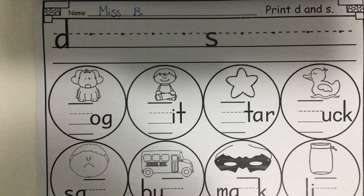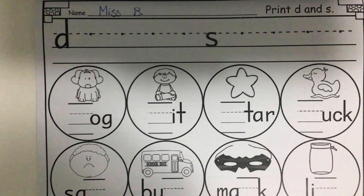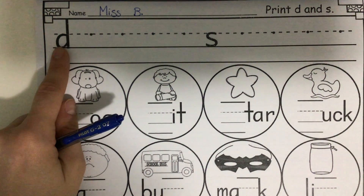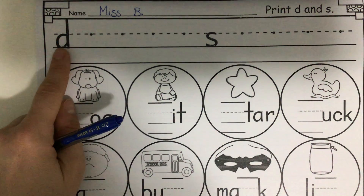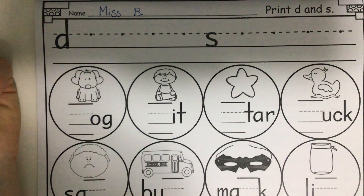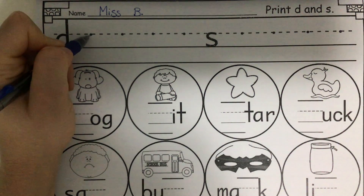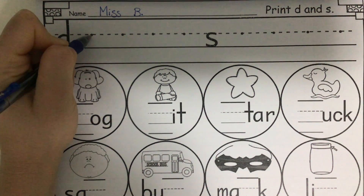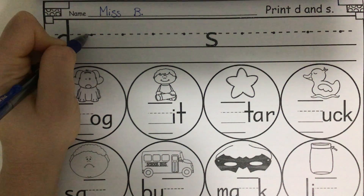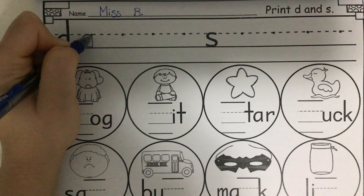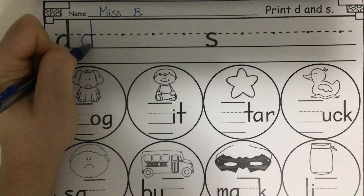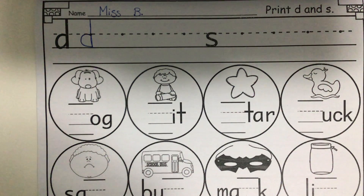Before we start listening for the different sounds in words, I want us to practice our letters of the week. Touch the first letter. What letter is that? D. What sound does D make? D. Let's go ahead and write the letter D together. Remember, the letter D starts just like the lowercase letter C. So point to the plane line, go back on the plane line, make a C, go up to the skyline, trace down to the grass line. Say D, dog, D.